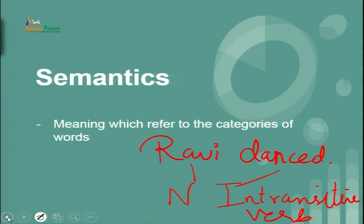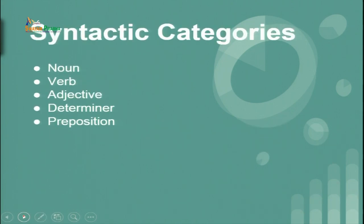When we talk about syntax, we generally put it into five categories — and more than that, because I have not included adverb here. Noun is something very different from the definition you have acquired since childhood. You might have learned that a noun is the name of a person, place, or thing, but let me tell you that this is a traditional definition which modern linguists do not agree with. In modern linguistics, a noun refers to the unit which comes right after the determiner.